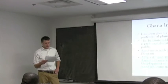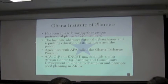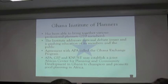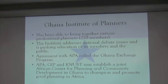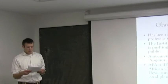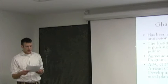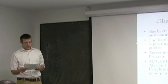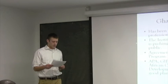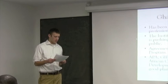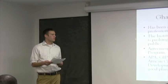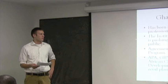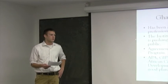The Ghana Institute of Planners is an organization that brings together planners across Ghana and has about 270 members. The institute addresses national debate issues and is pushing for education of its members and the public. It has an agreement with the APA — the American Planning Association — called the Ghana Exchange Program. The APA is helping build the membership of the Ghana Institute of Planners, develop educational programs, and provide a program where planners in Ghana can job shadow planners in America, with the hope that American planners will also learn from Ghanaian planners.